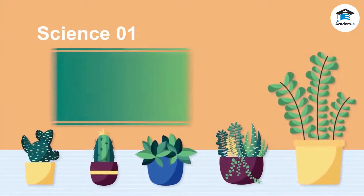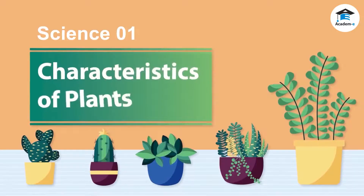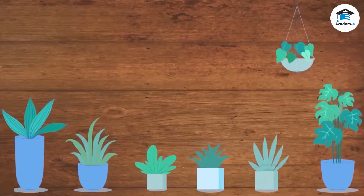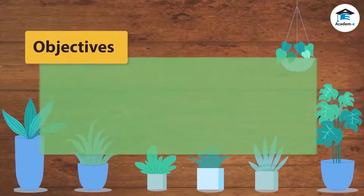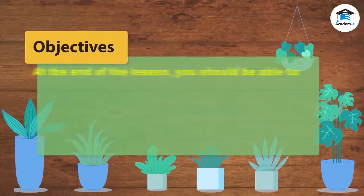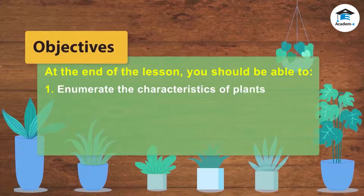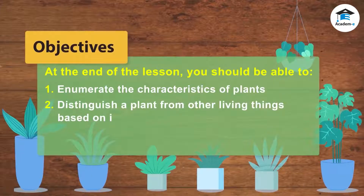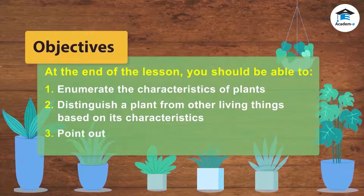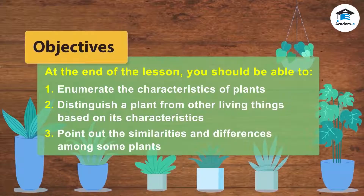Science 1: Characteristics of Plants. Objectives: At the end of the lesson, you should be able to enumerate the characteristics of plants, distinguish a plant from other living things based on its characteristics, and point out the similarities and differences among some plants.